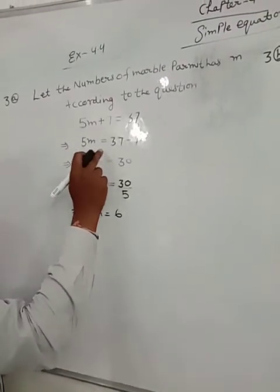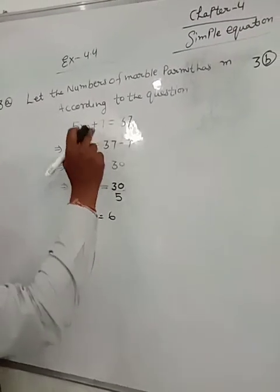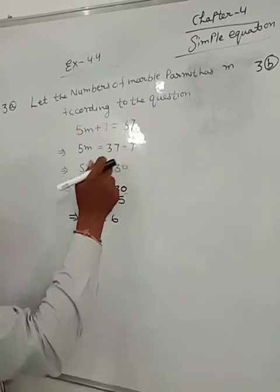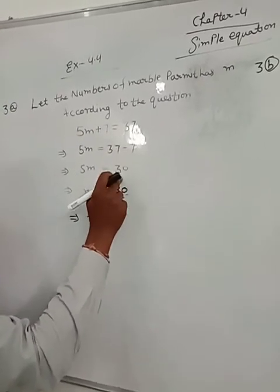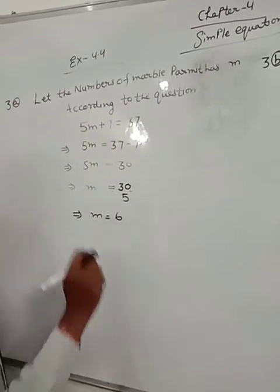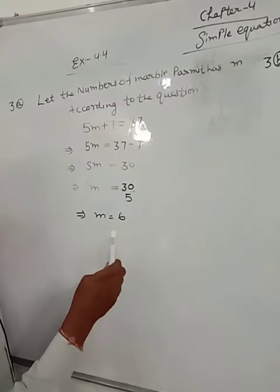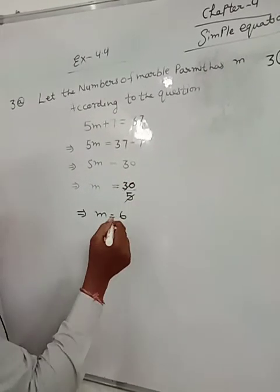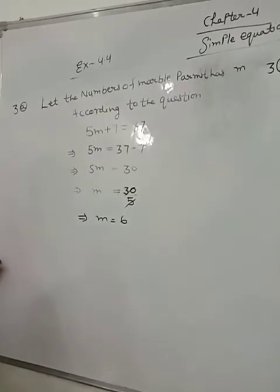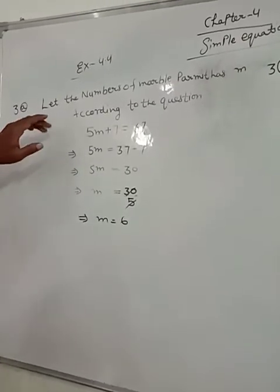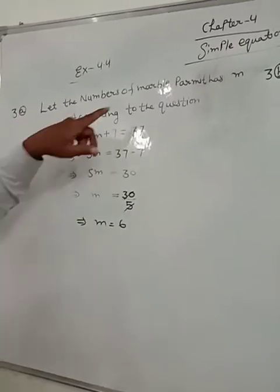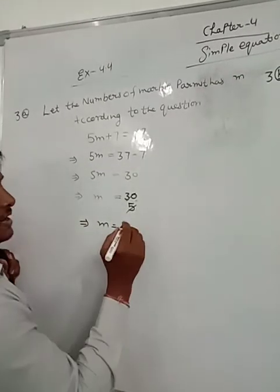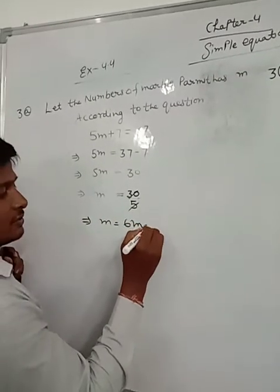So 5M equals 37 minus 7, which is 30. M is equal to 30 upon 5, which is 6. So Parmit has 6 marbles.